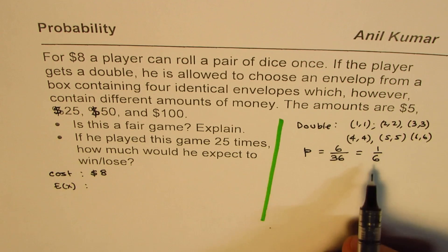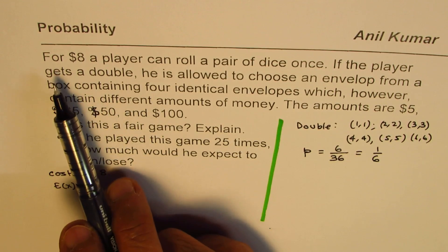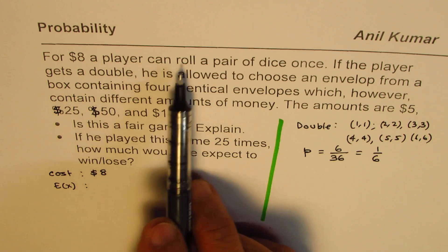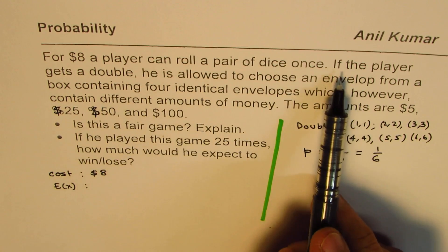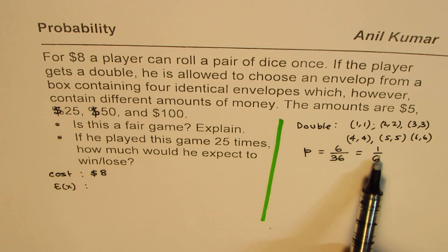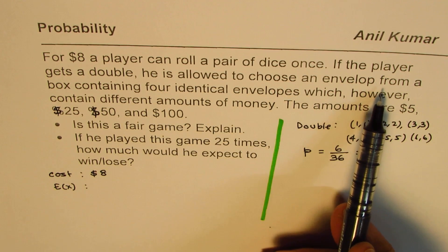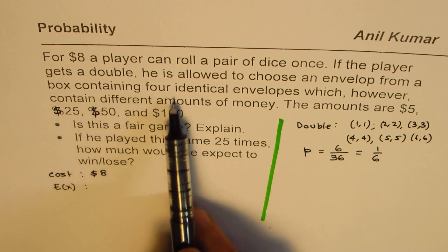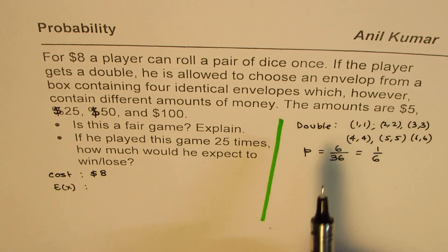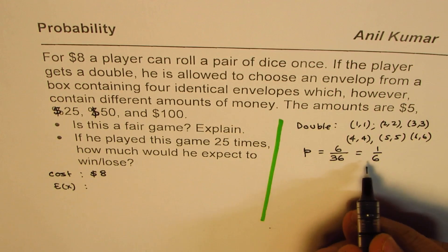Now if success is that, let's look into this question. For $8 a player can roll a pair of dice. If the player gets a double, which probability is 1 over 6, he is allowed to choose an envelope from a box containing 4 identical envelopes. So one event is followed by the other with an and condition. So the probabilities get multiplied.